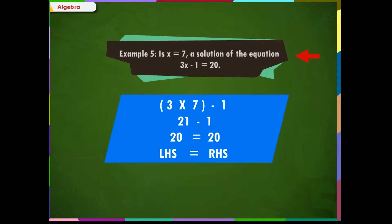Example 5: Is x equals 7 a solution of the equation 3x minus 1 equals 20? Let us put the value of x in the given equation. 3 times 7 is 21 minus 1 gives 20. So we get LHS equal to RHS. Thus x equals 7 is a solution of the given equation.